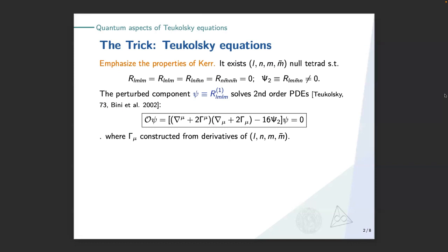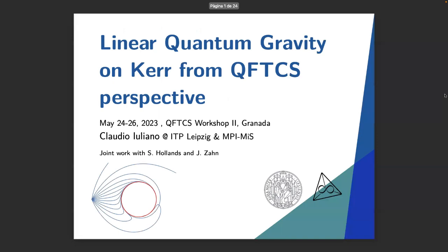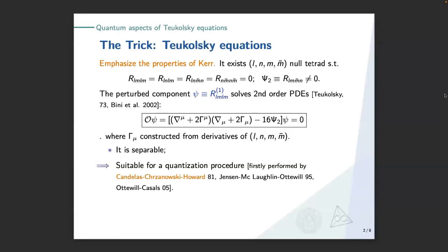This is a really nice equation because it looks like a wave equation of a Klein-Gordon field in some external potential. This external potential is constructed from the derivative of the tetrad, and is given by the Kerr metric. So you have the Kerr metric, the external potential, and C₂ — then you can quantize it. And Teukolsky proved that this equation is separable.